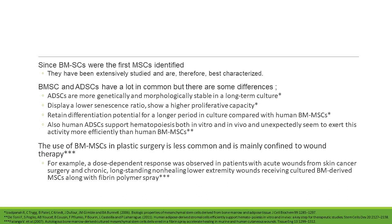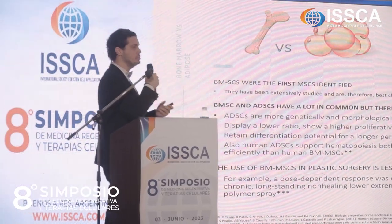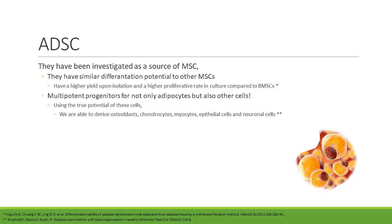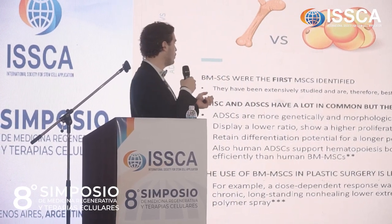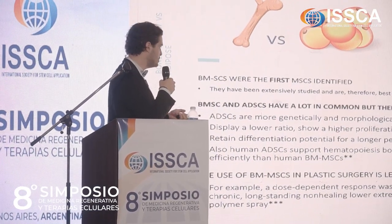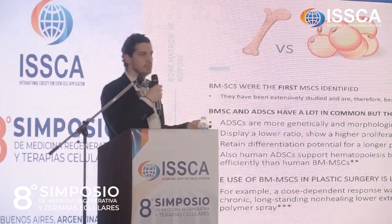Bone marrow stem cells were the first mesenchymal stem cell type identified, so there are many scientific studies about them. However, adipose stem cells are more genetically and morphologically stable in long-term culture. They display a lower senescence ratio and show higher proliferative capacity. They retain their differentiation potential for longer periods in culture compared to bone marrow stem cells. Bone marrow stem cells are mostly used in one-therapy approaches, but in plastic surgery we predominantly use adipose tissue-derived stem cells.